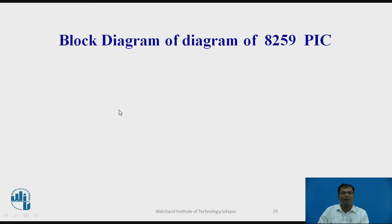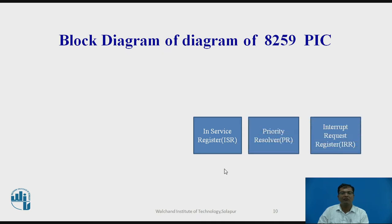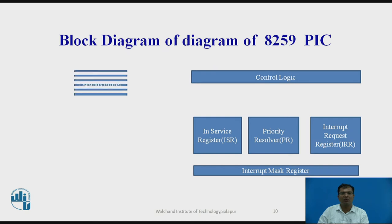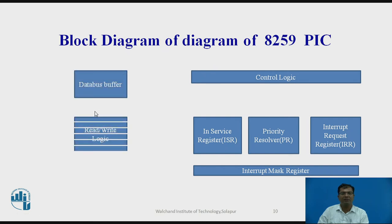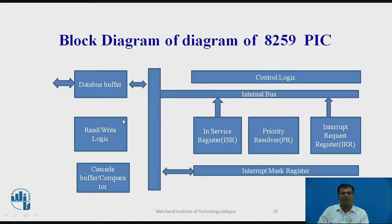Let us see the block diagram of 8259. This block diagram consists of different units: In-Service Register, Priority Resolver, Interrupt Request Register, Interrupt Mask Register, Control Logic, Data Bus Buffer, Read-Write Logic, and Cascade Buffer or Comparator. These units are interconnected, and the control logic is connected to all the units.